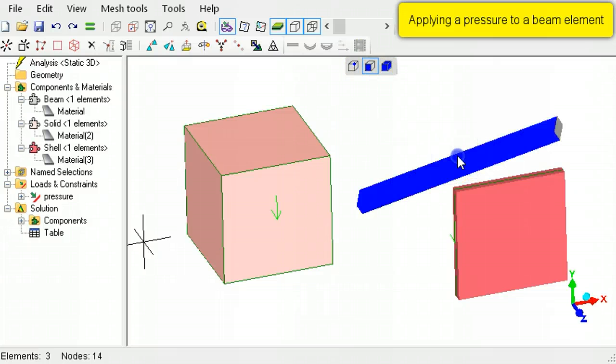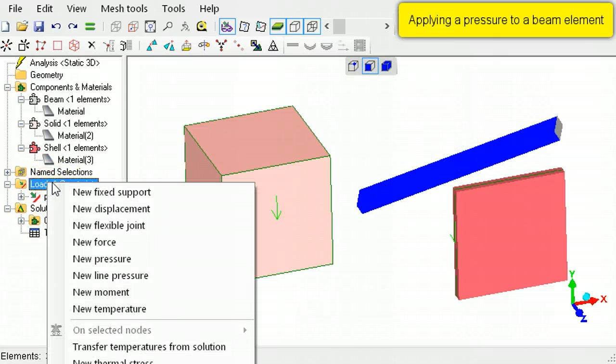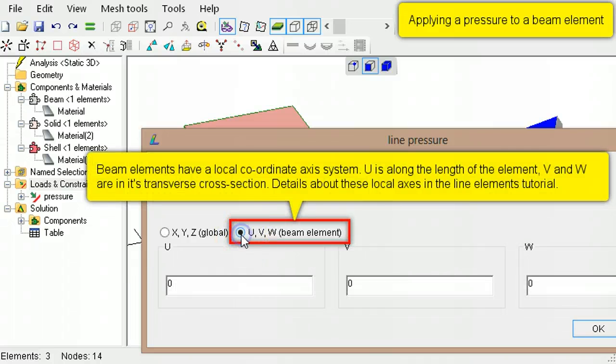Pressure can be applied to beam elements along their local U, V, and W coordinate axes directions.